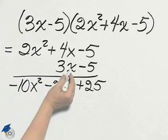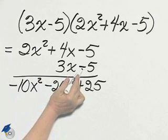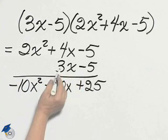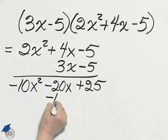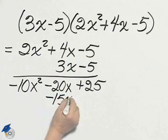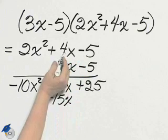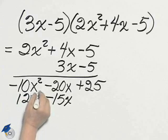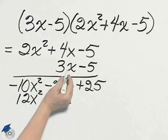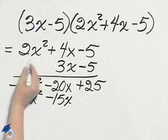Moving along to the 3x, that minus sign went with the 5. We have 3x times negative 5, which is negative 15x. 3x times 4x, 12x squared. 3x times 2x squared, 6x cubed.